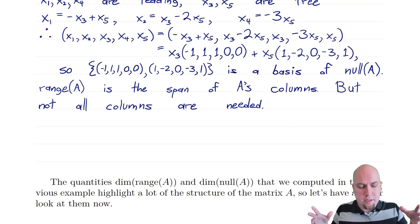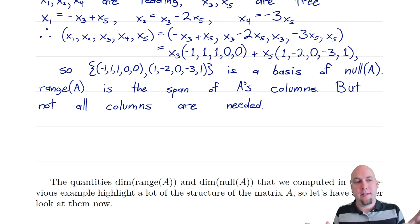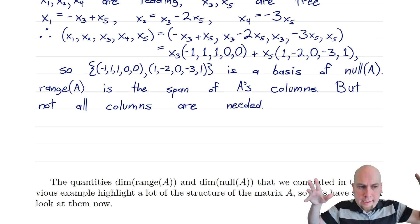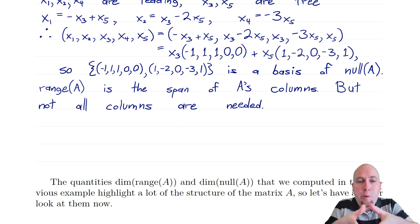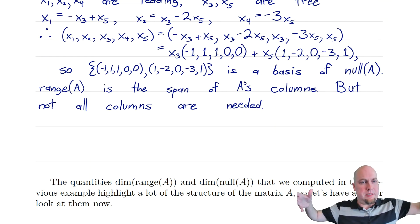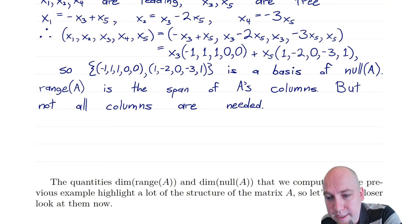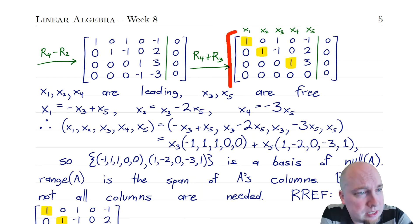Now let's find a basis of the range. We already have a theorem that says the range of a matrix equals the span of its columns. But typically you don't want to take all columns, because sometimes there are linear dependencies among those columns — taking all columns can be overkill. To find a basis of the range, we take the reduced row echelon form of the matrix, which we already computed when finding the null space.